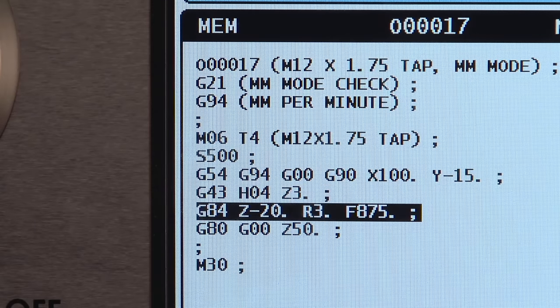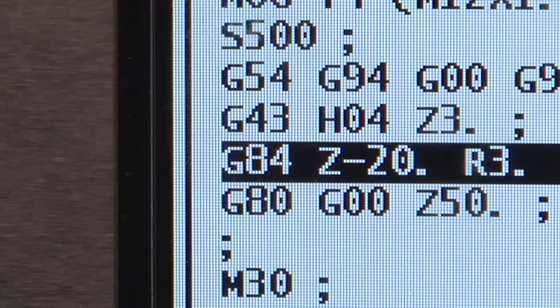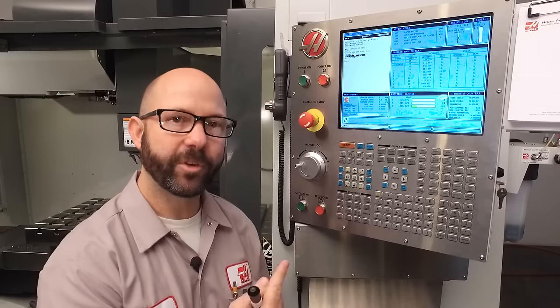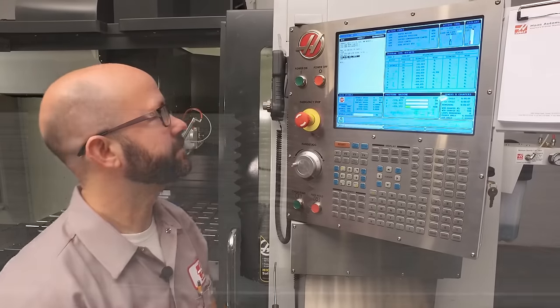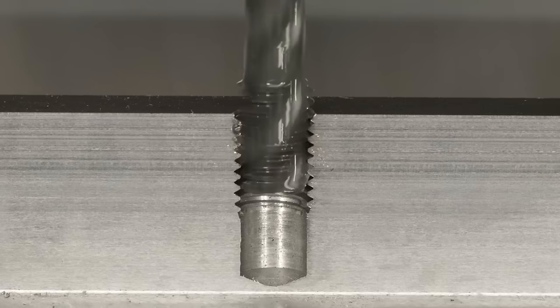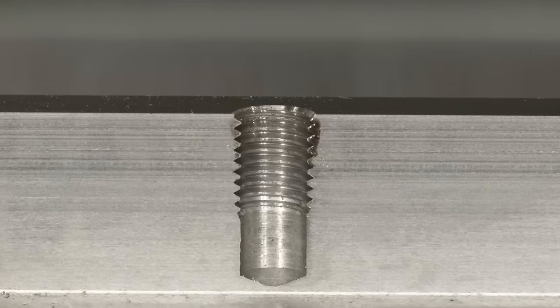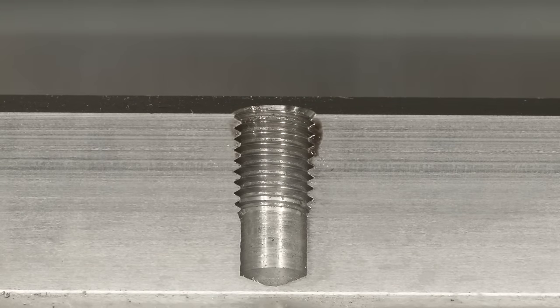Also, we used a G84 because we're using a right-hand tap. If you were going to cut a left-hand thread, we'd use a G74. You can look up G74 in the manual. Well, we've done it. We've programmed our metric tap.